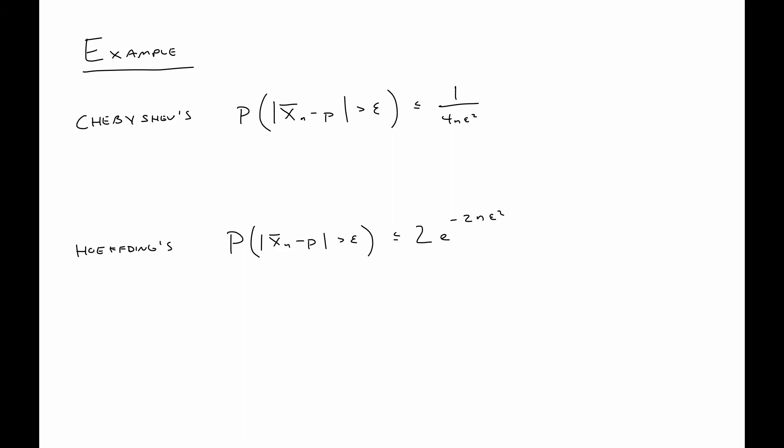I've already written the two general bounds here, but let's consider a particular n. Let's say we have an n of 200, and we want the error, that is the distance between the sample mean and the true mean, to be at least 0.1. Then I just plug in some values, so we get one over four times 200 times 0.1 squared, and I already plugged this into a calculator and we get something like 0.125.